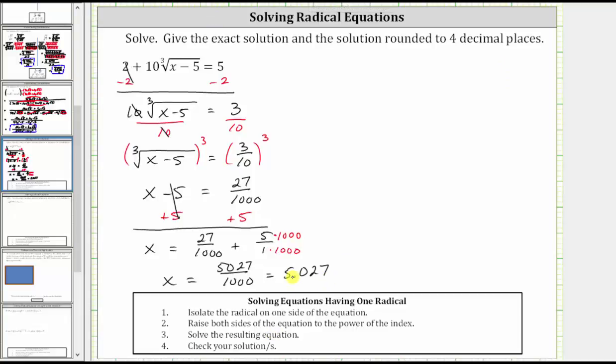Whenever we solve a radical equation, it is important to check the solution. So now let's verify the solution does work. To do this, we will substitute 5027 over 1000 back into the original equation.